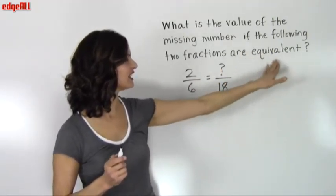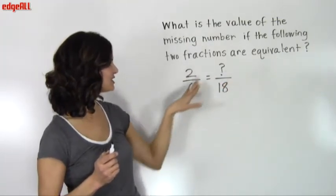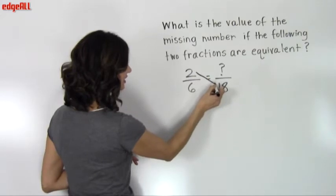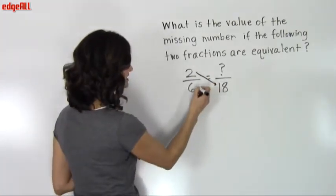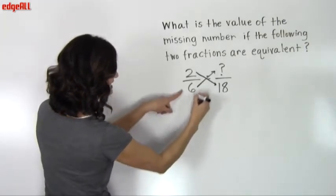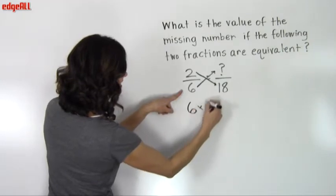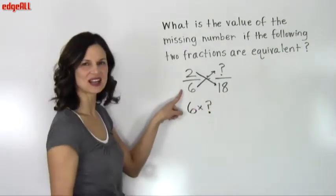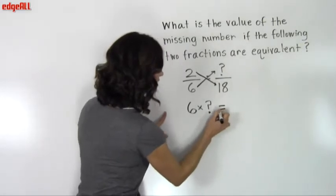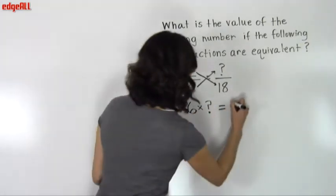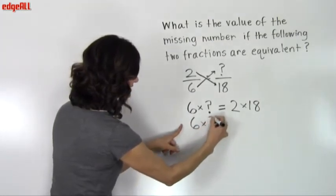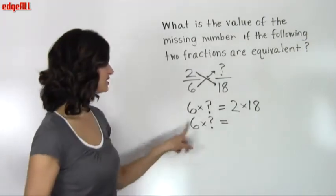Since we know they are equivalent, we also know that the cross product should be the same. So when we multiply this numerator by this denominator, it needs to equal this denominator times this numerator — that's our cross multiplication. So we can say that 6 times this unknown number has to be equal to 2 times 18. So 6 times some unknown number is going to be equal to 36.